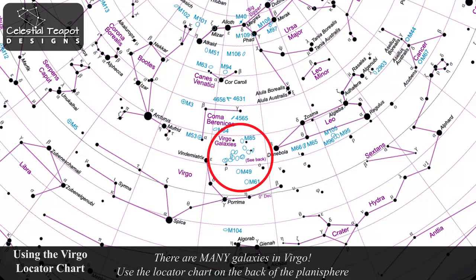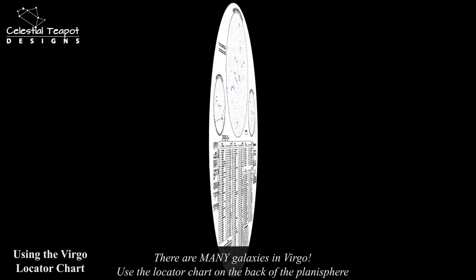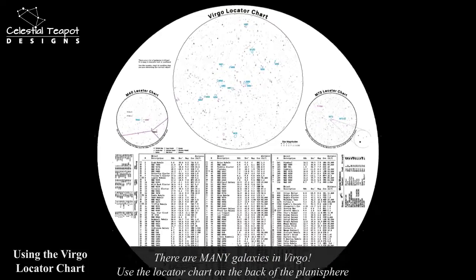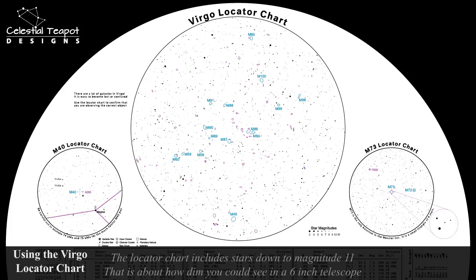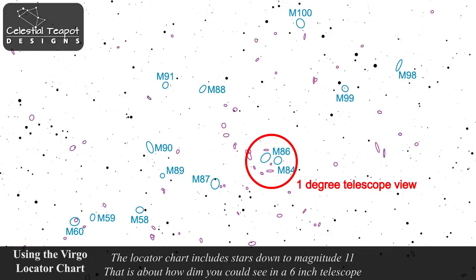As you can see on the chart, there are many galaxies packed into a small space in Virgo. Turn the planisphere over and look on the back for a detailed finder chart. The Virgo locator chart has stars plotted down to magnitude 11, similar to the stars you would see while looking through a 6-inch telescope. The chart was designed to be used at the telescope to help identify the correct galaxy you're trying to observe and also to star hop between galaxies.